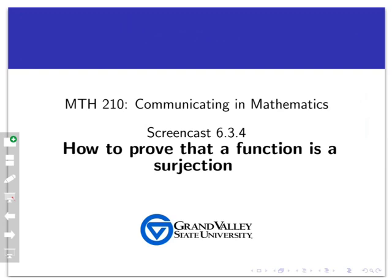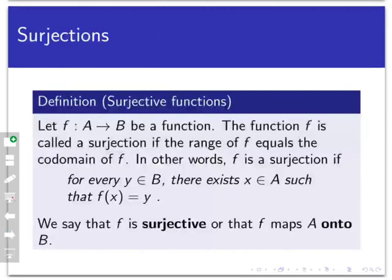Welcome back to another video about surjections. In this video, we're going to pick up on the cliffhanger from the last video and talk about how to prove that a function is a surjection. Let's begin by reviewing the definition. We let f be a function from A to B, and f is called a surjection if the range of f equals the codomain.